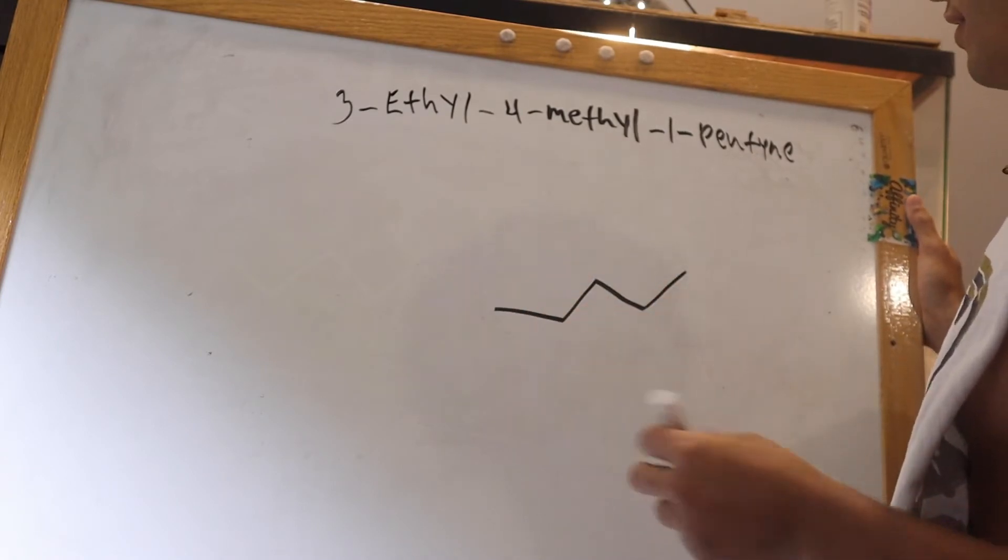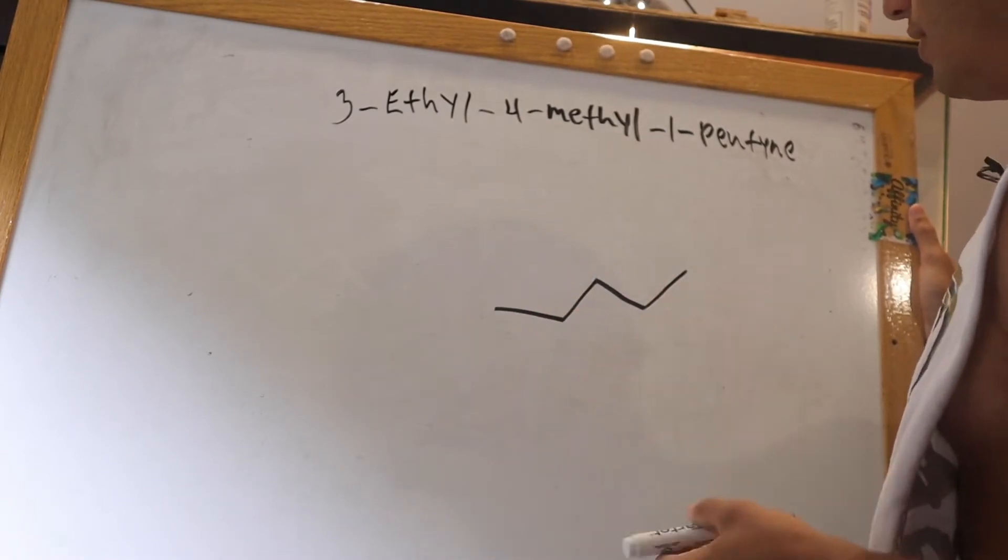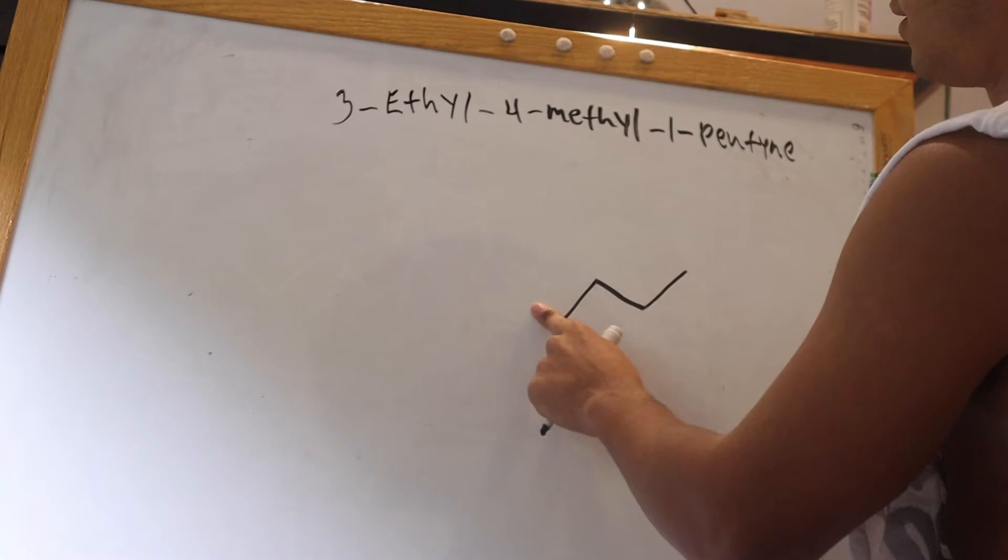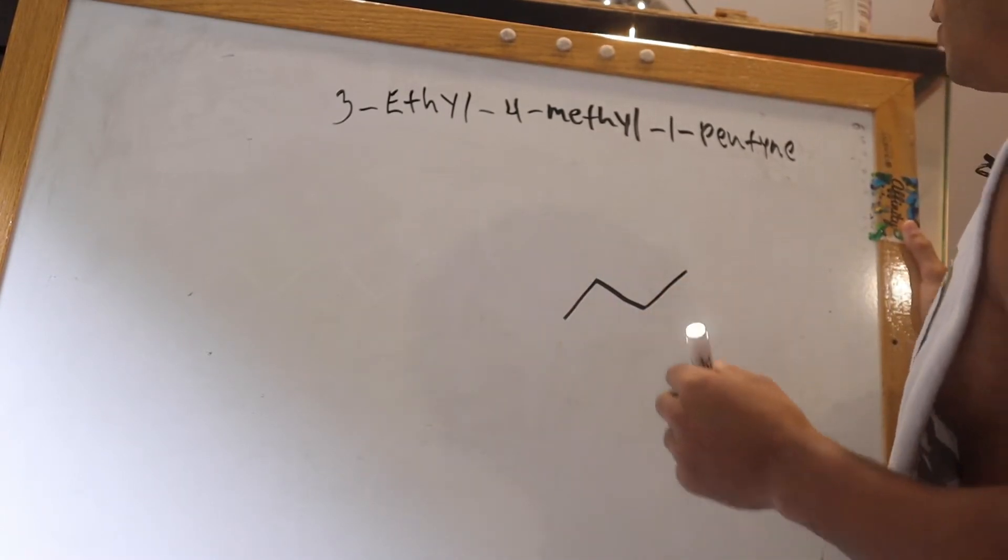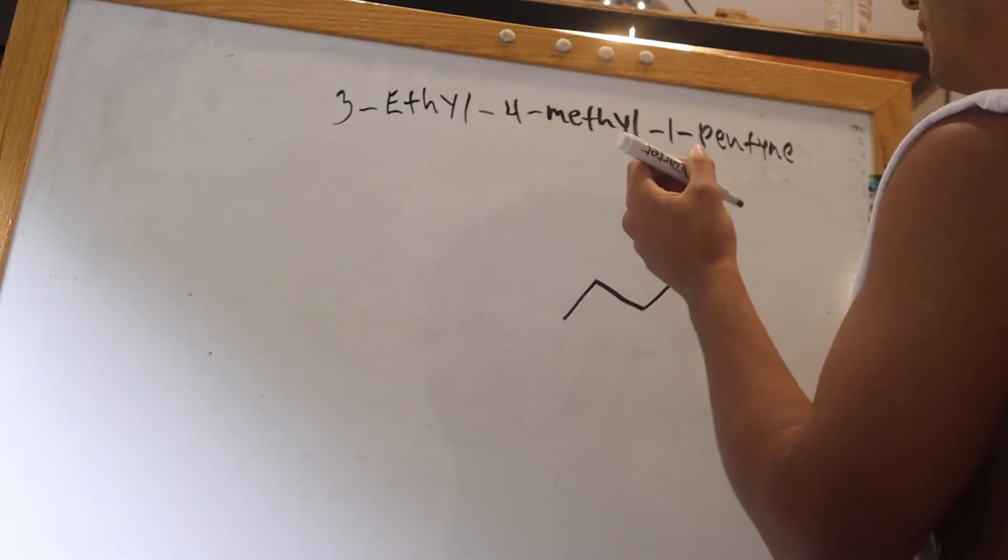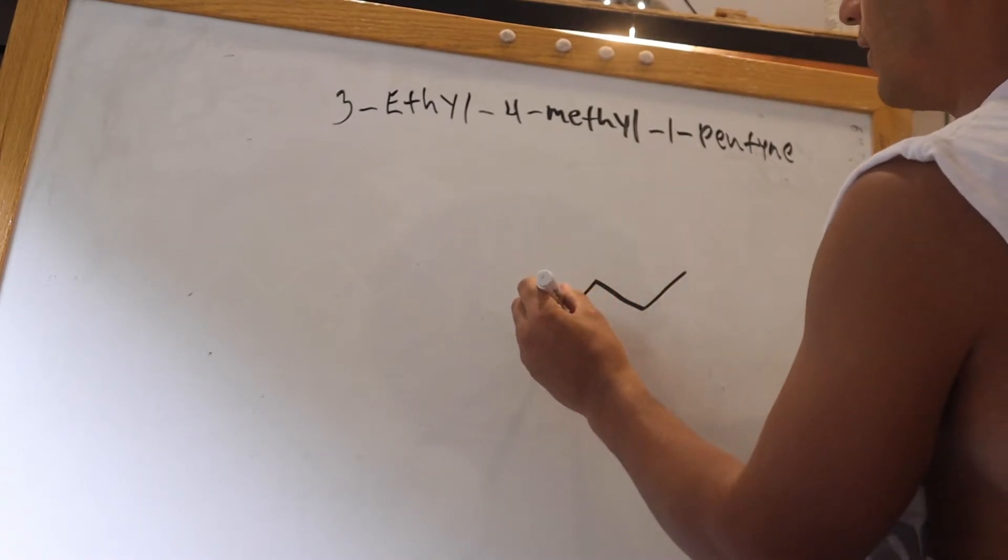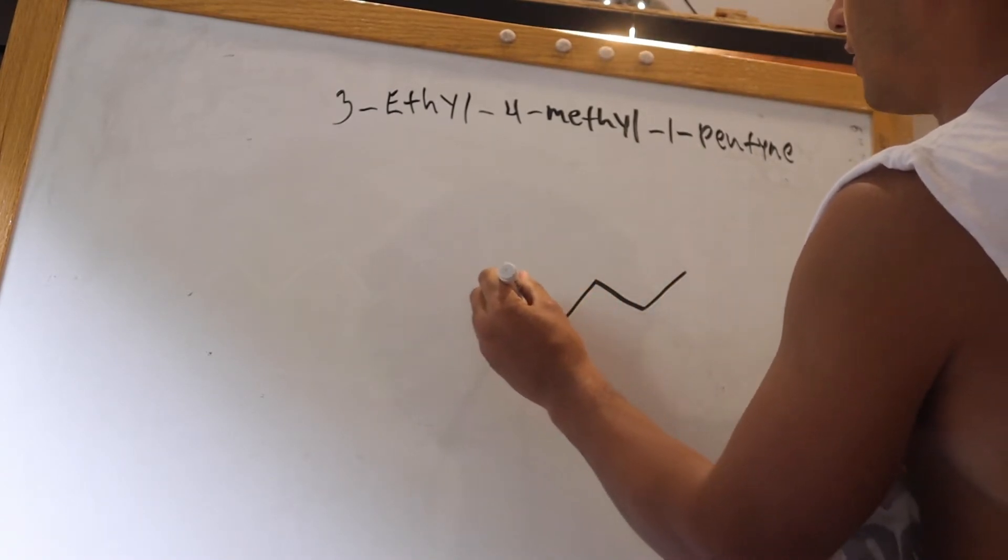Okay, here's the thing though. When you're counting these, or when you're drawing these in the bond line structure, basically, well, we'll leave it like this so you guys can see, because this confused me a lot at one point.